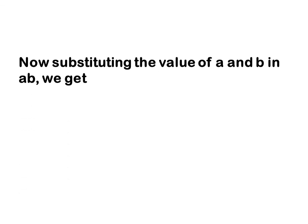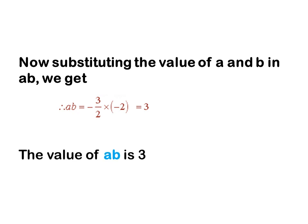Substituting the values of a and b into ab, we get (-3/2) × (-2). Minus times minus is plus, and 2 and 2 cancel, so the value of ab is 3. The correct option is (a).